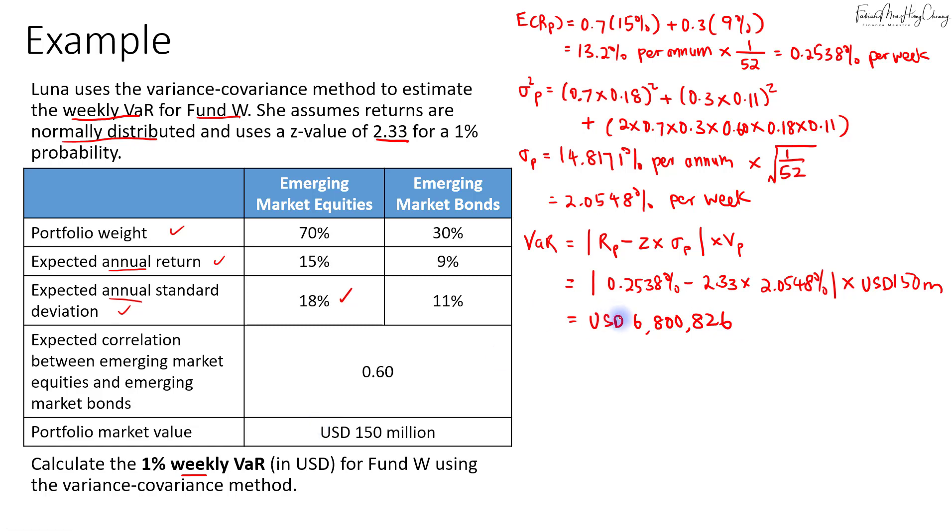We can say that within a one-week period, there is a 1% chance that the loss for this fund could be more than 6.8 million dollars. That's how we calculate the VaR. Always remember to check the interval for the VaR and the time interval given for the return and standard deviation. If they are different, you will have to scale, and be careful when you scale the return and standard deviation.